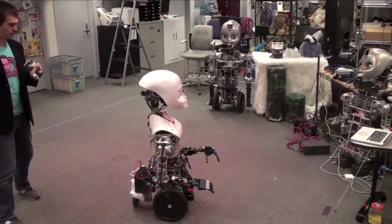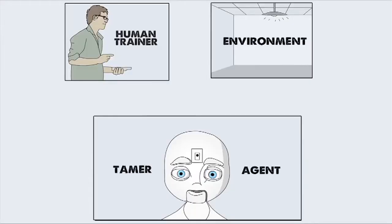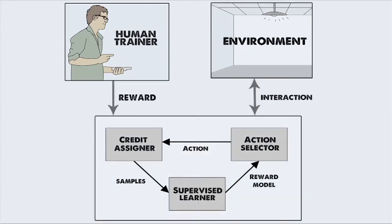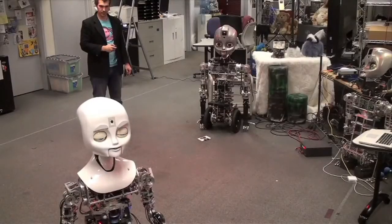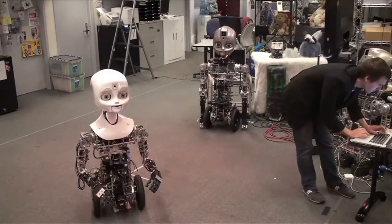Here's how it works. A TAMER agent, in this case the robot Nexi, acts to affect the state of its task environment. Nexi is given the option of moving forward, turning left, right, or standing still.